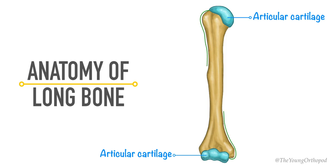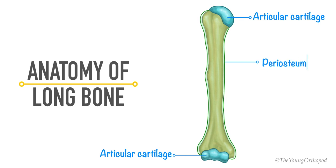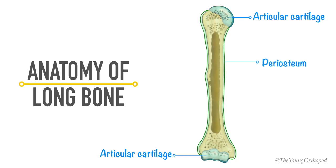The rest of the external surface of the long bone is covered with a tough connective tissue sleeve called the periosteum. The nutrient foramen is an oblique canal usually situated in the middle third of the diaphysis of the long bones.